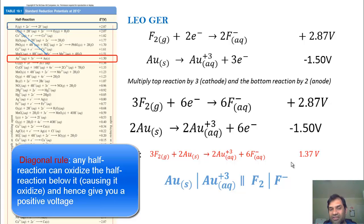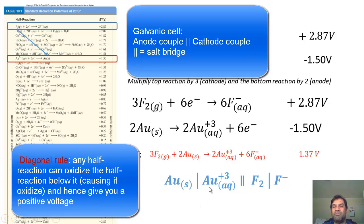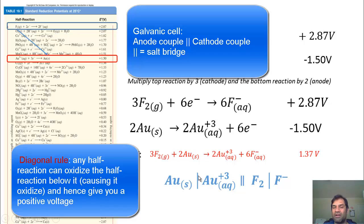Positive voltage — that's a good thing. That means this is a battery involving the anode–salt bridge–cathode couple. The anode is Au solid going to Au³⁺; the cathode is F2 being reduced to F⁻. This battery dispenses 1.37 volts. Shown at the bottom is the galvanic cell notation: anode, salt bridge, cathode — with the corresponding balanced redox reaction. These two representations are essentially the same thing.